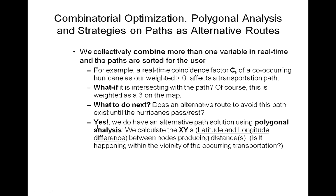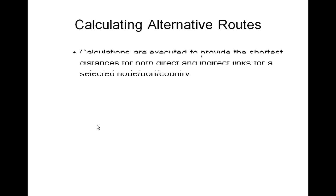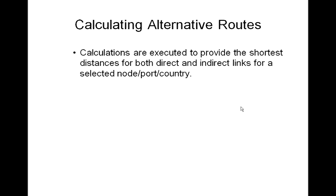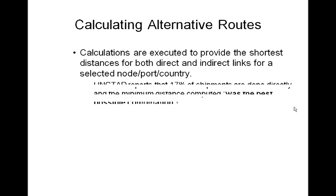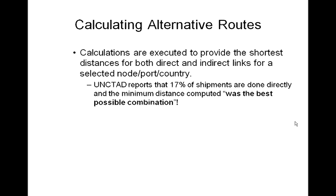In calculating the alternative routes, calculations are executed to provide the shortest distance for both direct and indirect links for a selected node, port, or country. UNCTAD reports that 17% of the shipments overall are done directly, and the minimum distance computed was considered the best possible combination.